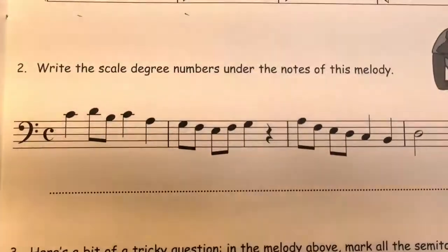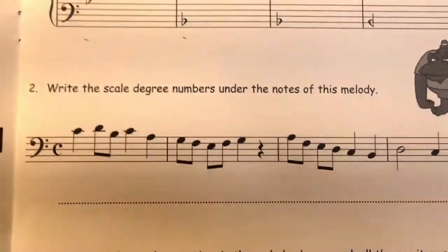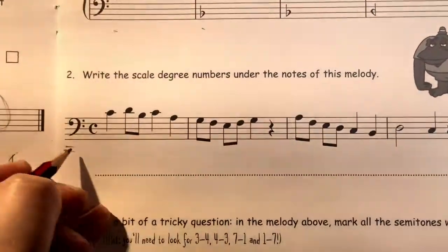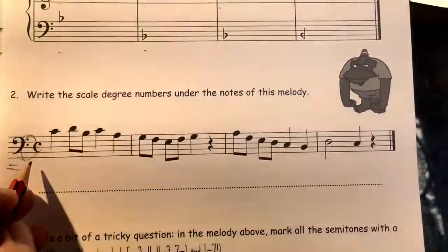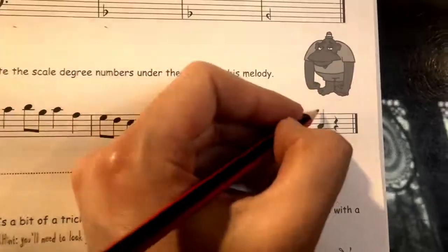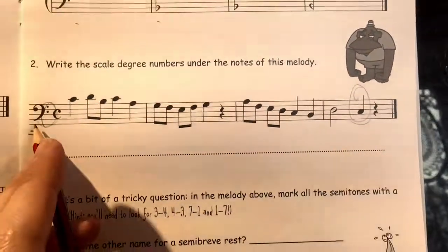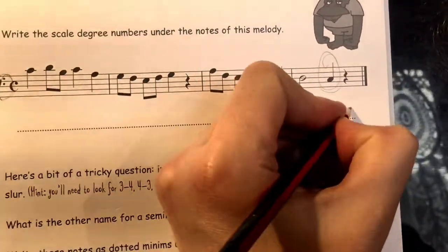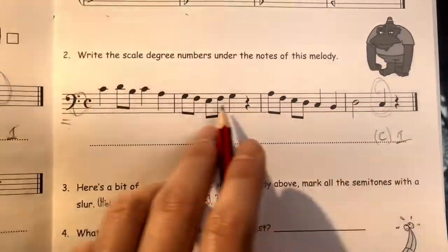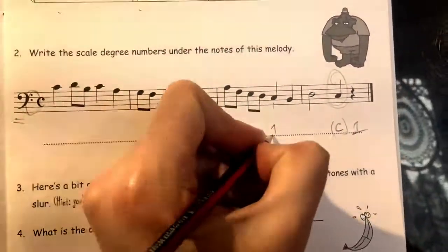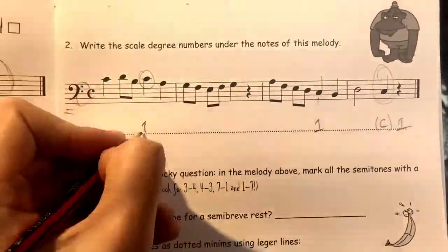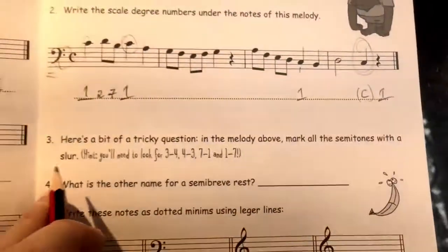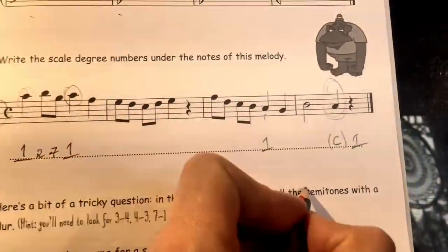Write the scale degree numbers under the notes of this melody using the same method as before. Take note of your clef and key signature — in this case no flats and no sharps — and then the final note of the melody, which tells you the first scale degree. In the bass clef, this note is a C, so C will be our number one. Go through the whole melody and find all the C's — each one, including those an octave up, will also be number one.